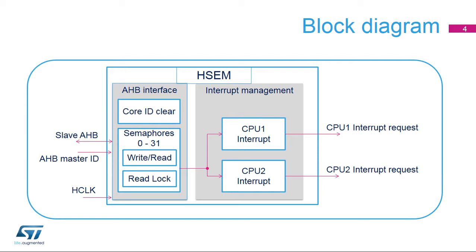Each CPU has its own enable, status, mask, and clear register for the semaphores. Each semaphore consists of two registers: a write-read register used to write-lock the semaphore in the two-step procedure and read back the semaphore's status. The write-read register is also used to free a semaphore. The read-lock register is used to read-lock the semaphore in the one-step procedure. The AHB bus master ID is used to identify which CPU is accessing the semaphore. This ID is stored in the semaphore when locking and can be read back from the semaphore's status as core ID. In STM32H7 microcontrollers, CPU1 uses core ID 0x03 and CPU2 has core ID 0x01.